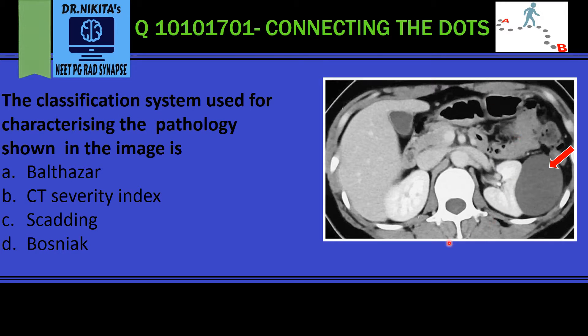First of all, this is a CT scan because the bones are white. Next, this is a contrast-enhanced CT because the aorta and vessels are also white.